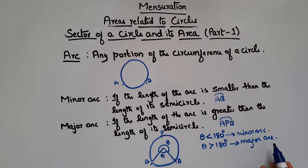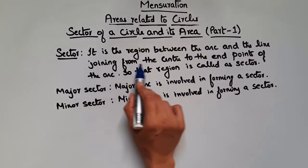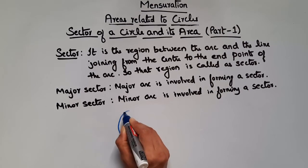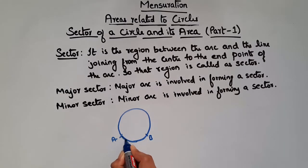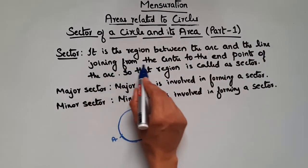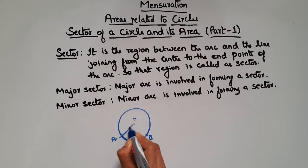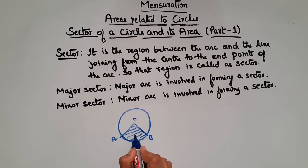Now let's see what is a sector. A sector is a region between the arc and the line joining from the center to the end points of the arc. Let me draw a circle. We take an arc AB. We have a center here, and the lines join from the center to the end points of the arc. This enclosed region between the arc and those lines is nothing but a sector.